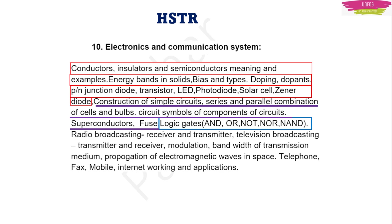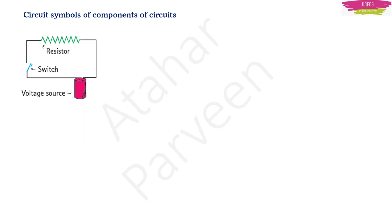Before starting this lecture, I would like to request you all to please like and share this lecture as well as all other lectures uploaded for HSTR. If you have not subscribed to my channel, please do subscribe and share my channel with other aspirants and your friends. The simple electric circuit components are: a cell or a battery, connecting wires, a bulb, and a switch.